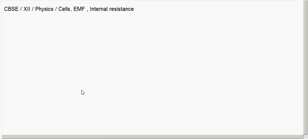In today's class we will see about cells, EMF, and internal resistance. First, we will see what is an electrolytic cell. An electrolytic cell is a simple device to maintain a steady current in an electric circuit.